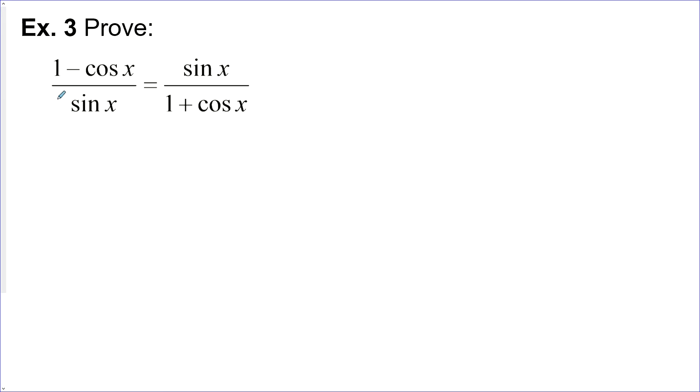Example three, we want to prove this: (1 - cos x)/sin x = sin x/(1 + cos x). We have 1 - cos x here and 1 + cos x here and sin x and sin x. Everything is in a basic form. We don't have 1 - cos x anywhere on our formula sheet. We do have 1 - cos²x. Let's create that. On the left side, let's multiply by the conjugate: 1 + cos x. Since we did that for the numerator, we'll have to do that in the denominator as well.